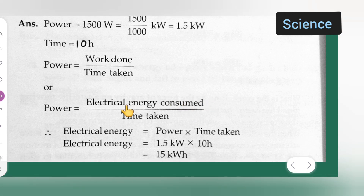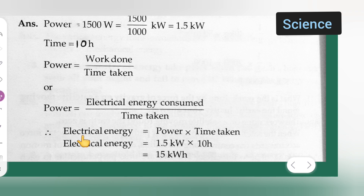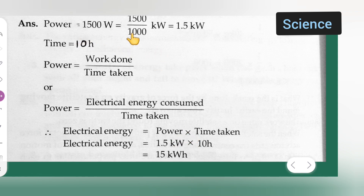Rearranging the formula, electrical energy is equal to power multiplied by time taken. Power is 1.5 kW, and time taken is 10 hours.